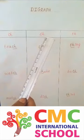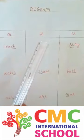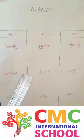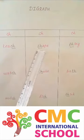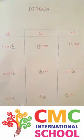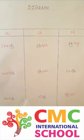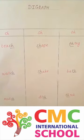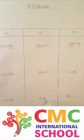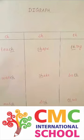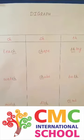Letters S and H make the sound SH. For example: dish.